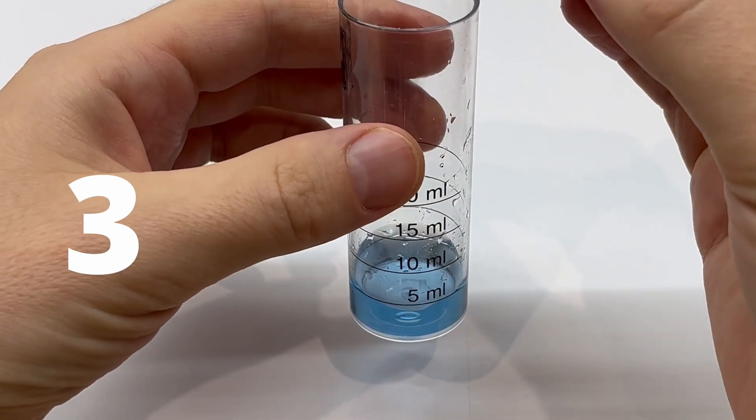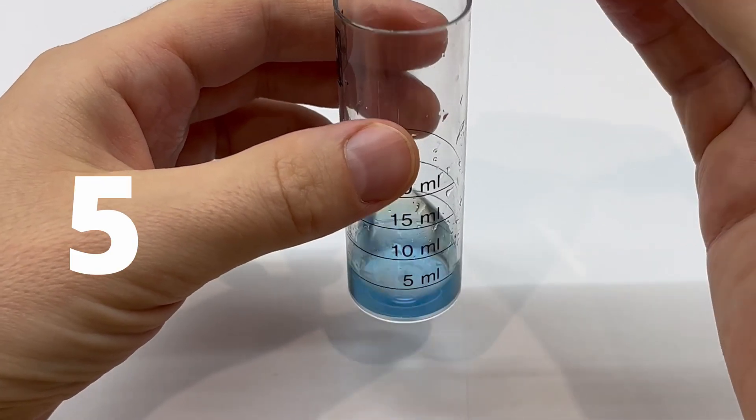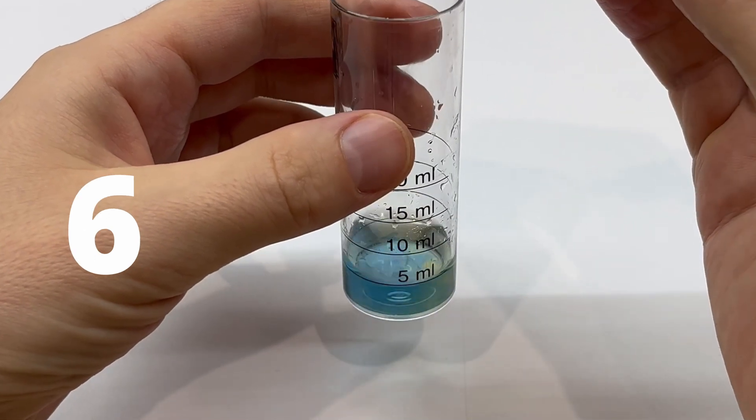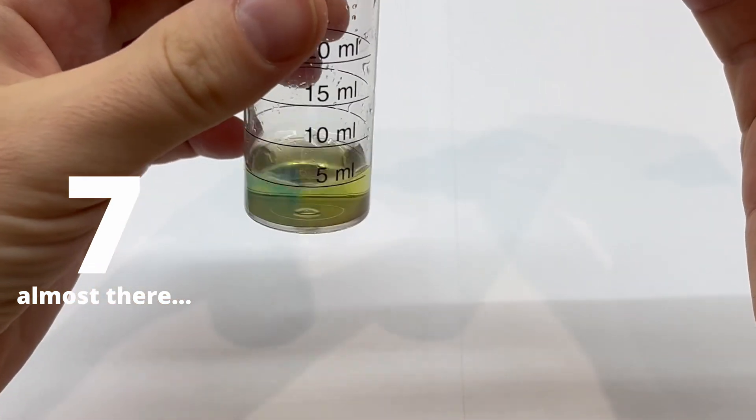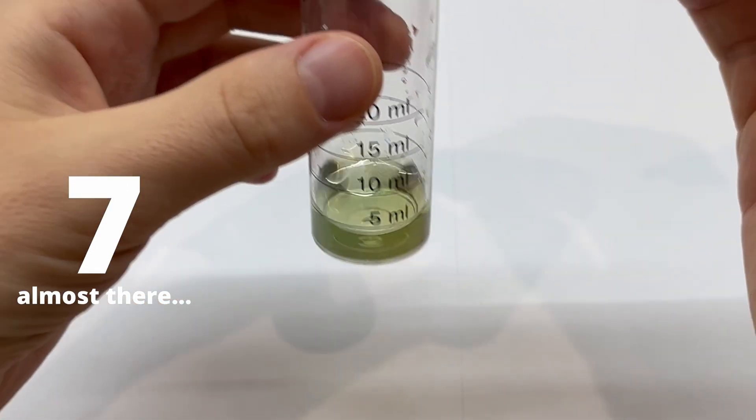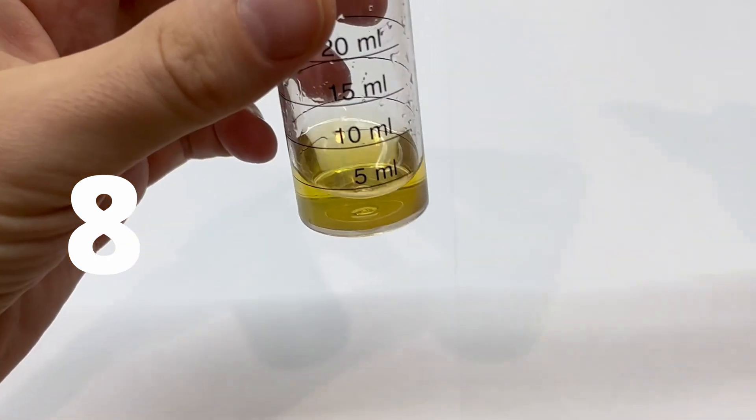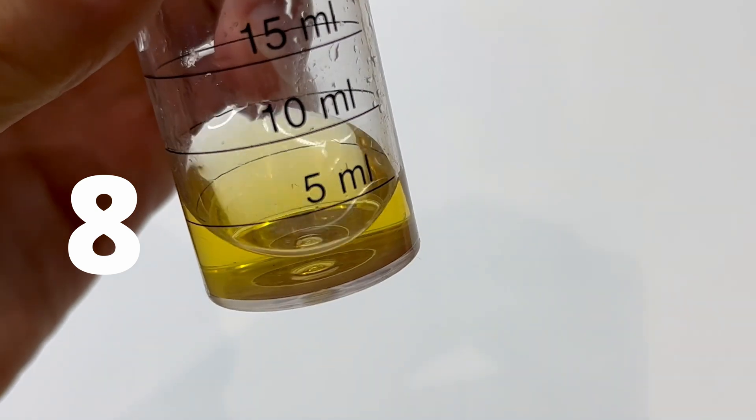One drop is 1 degree of KH. So to put it simple, when the water changed from blue to yellow, I was at my 8th drop and that means that my KH is 8. So this method is very precise. There is no range, no uncertainty and the colorings are very obvious.